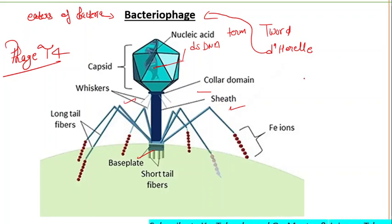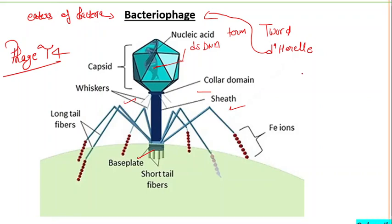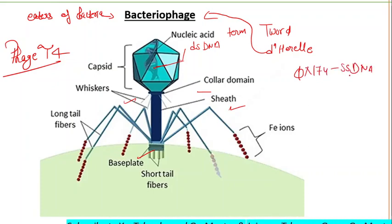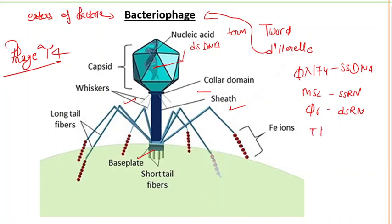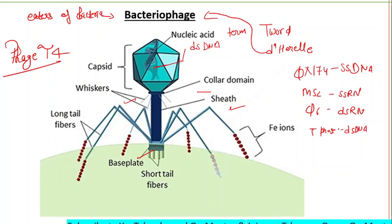Bacteriophages have either double-stranded or single-stranded DNA, though most have DNA as their nucleic acid. For example: phage φX174 has single-stranded DNA; MS2 has single-stranded RNA (plus sense); phage φ6 has double-stranded RNA; and T phages have double-stranded DNA. Most phages have double-stranded DNA.